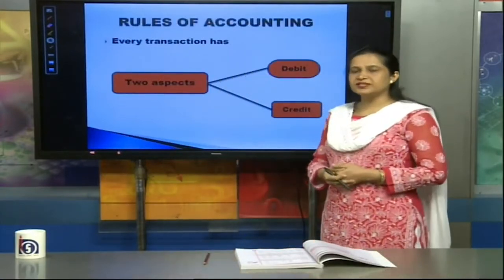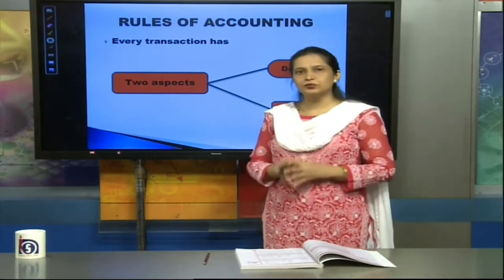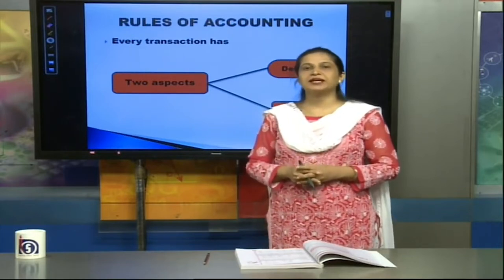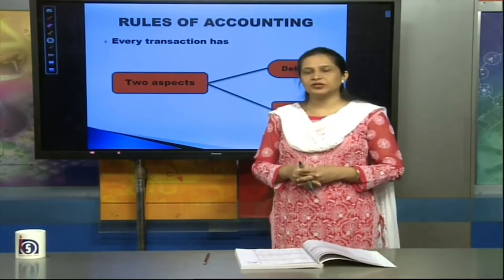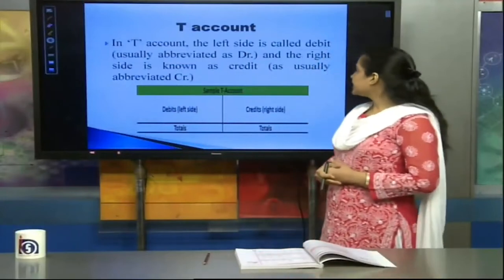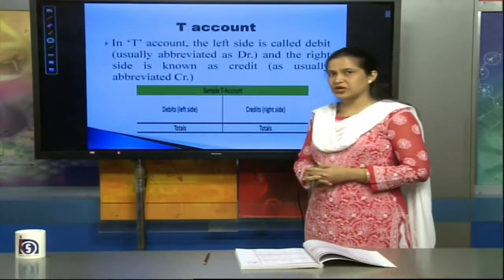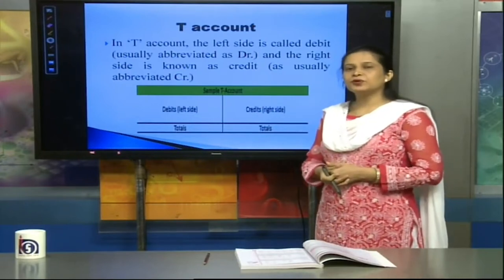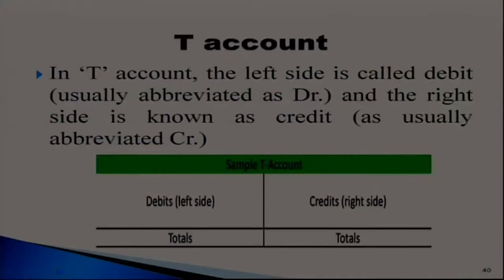Now there are some rules that whenever we are doing accounting, certain rules must be followed. Whenever we talk of a transaction — any transaction — there are two aspects of it always: debit aspects and credit aspects. So what is the T-account? Let's know about this. If you will make any account, you will make it in the form of a T-account. It looks like the letter T — that's why you call it a T-account. You write the title on top; this side is your debit side and the right-hand side is your credit side.